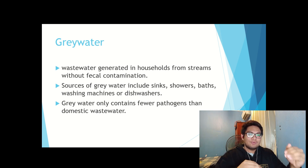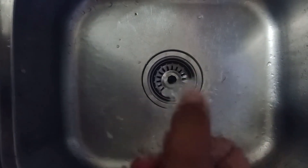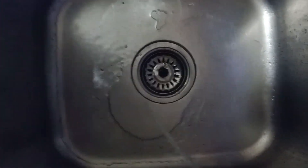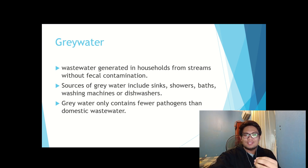Sources of grey water include the sink, shower, bath, washing machine, or dishwashers. Grey water only contains a few pathogens from domestic waste water such as traces of dirt, food, grease, hair, and certain household cleaning products, so it is generally safe to handle and easier to treat and reuse on-site for toilet flushing.